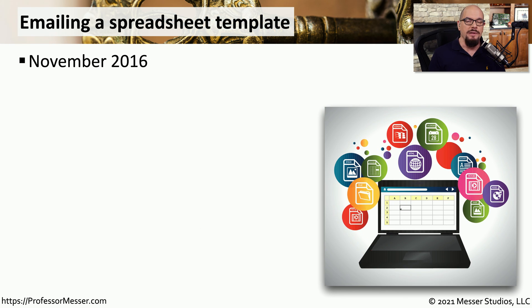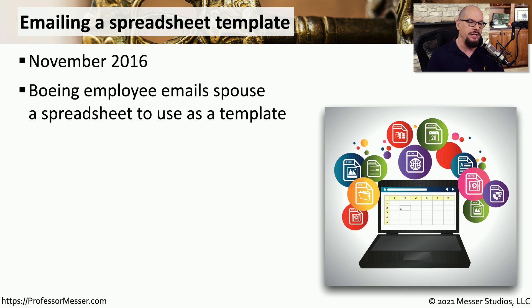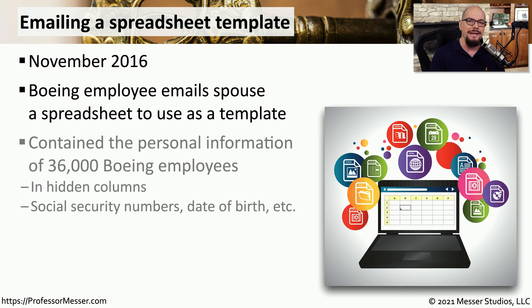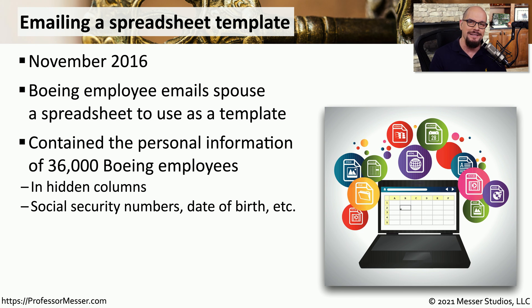A good example of how important it is to have DLP in our email systems occurred in November of 2016. An employee at the Boeing organization emailed their spouse a spreadsheet that they would then be able to use as a template for a different project. Unfortunately, hidden in that template spreadsheet was the personal information of 36,000 Boeing employees.